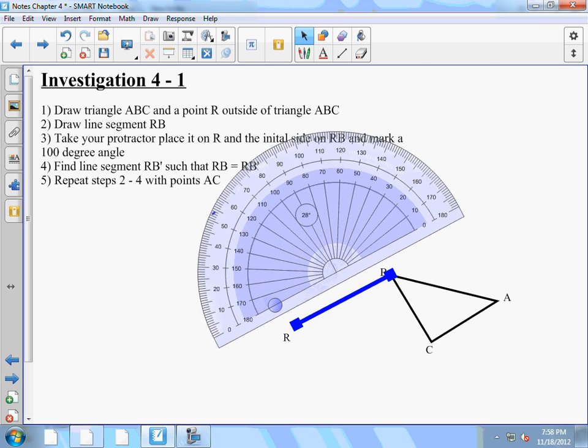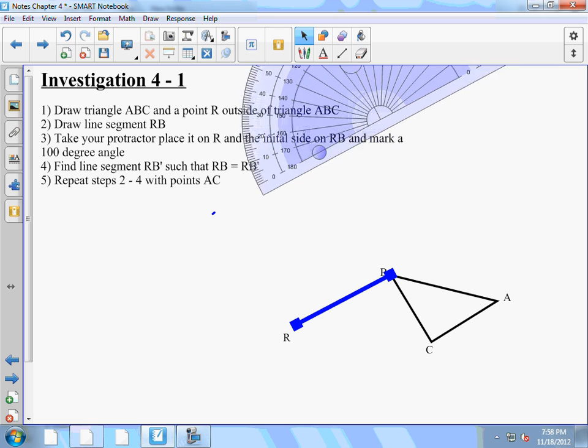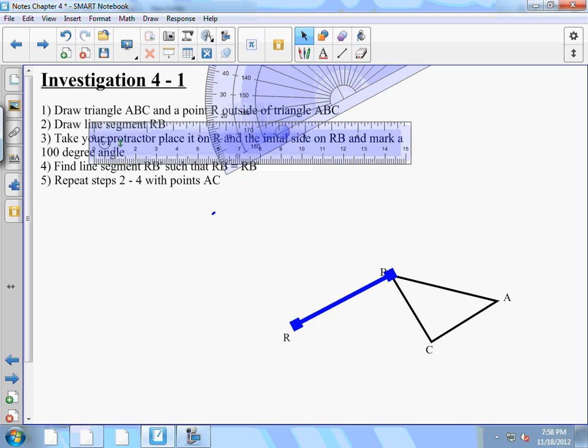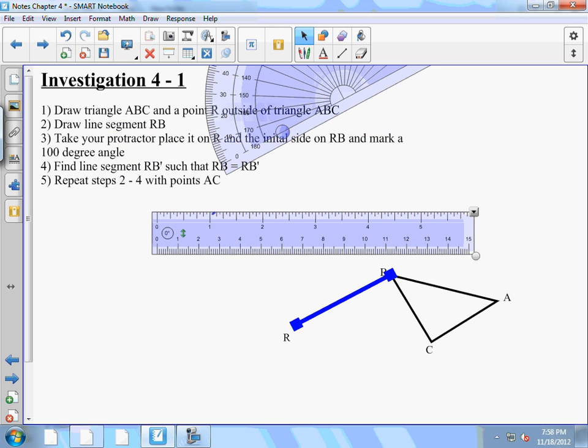And mark that 100 degrees. All right, now the next thing we're going to have to do is measure line segment RB. We're going to take our ruler, and I'm going to use the centimeter side.